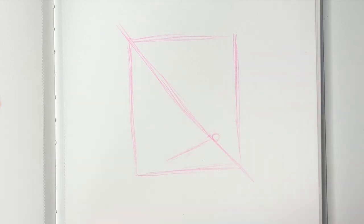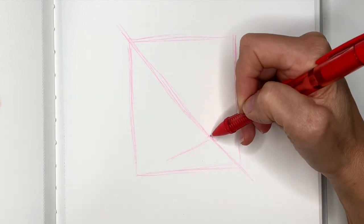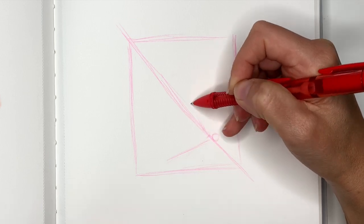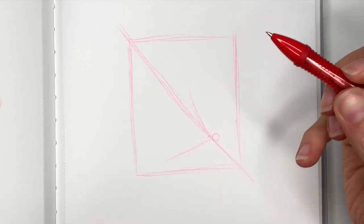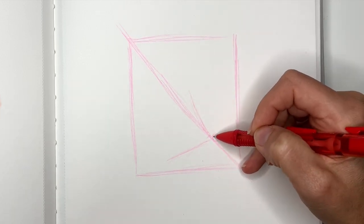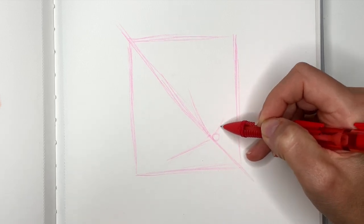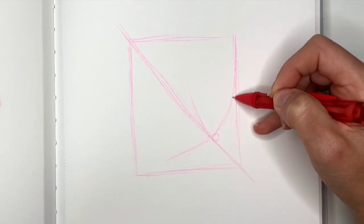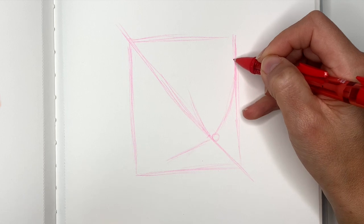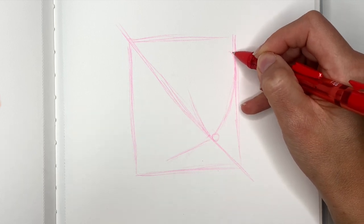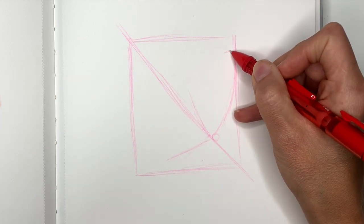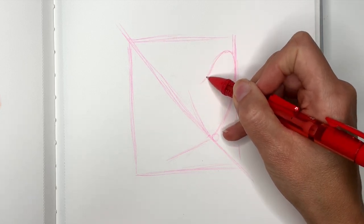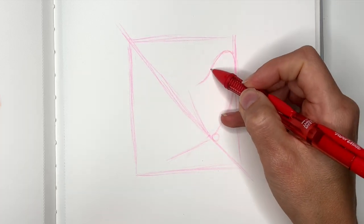Now right about here we're going to draw one of our wings and it's going to go towards the frame, not all the way to the top, and then turn in a curve like this.